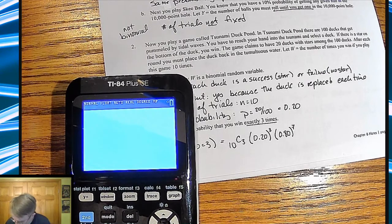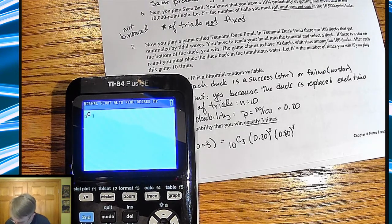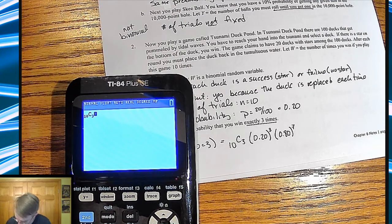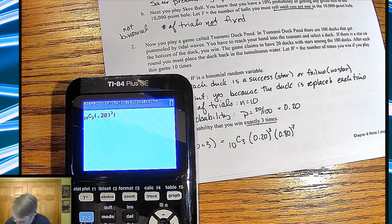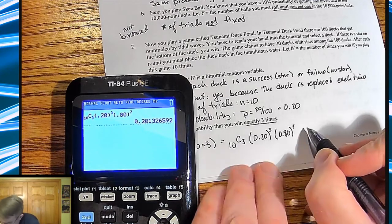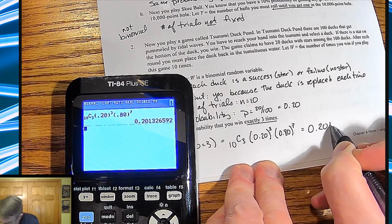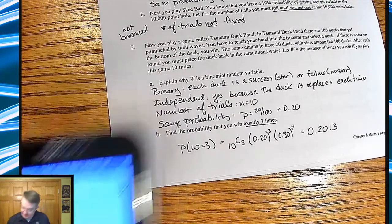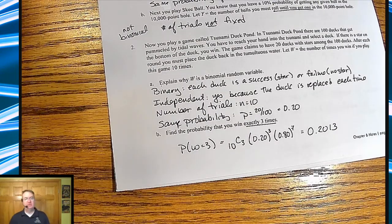So type this in. We're going to go down to N choose R. We're going to choose 10 and three. Make sure you arrow out. 20% raised to the third power, and then 80% raised to the seventh power. And you do it, and you come up with an answer of just over 20%. So you have a probability of winning about 20% of the time.